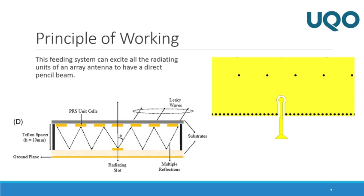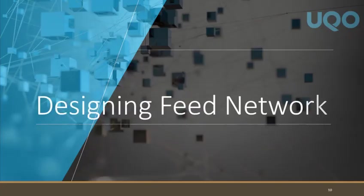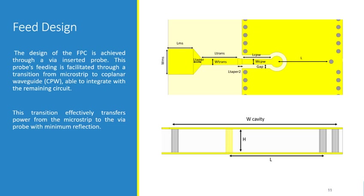In this session, I'm going to talk about designing the feed network and also the procedure that we took to design the antenna. In this specific design, the design of the Fabry-Perot cavity is achieved through a via inserted probe. This probe's feeding is facilitated through a transition from microstrip to CPW, able to integrate with the remaining circuit. So this transition effectively transfers power from microstrip to the via probe while minimizing the reflection.